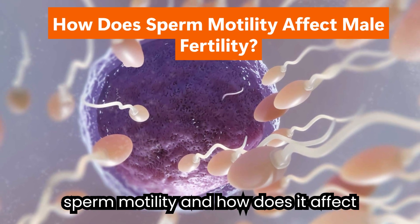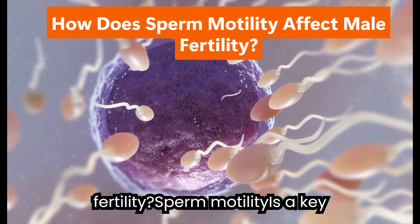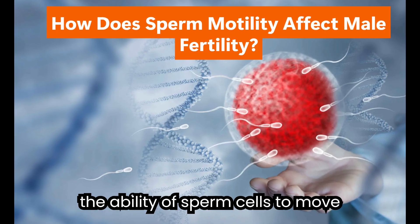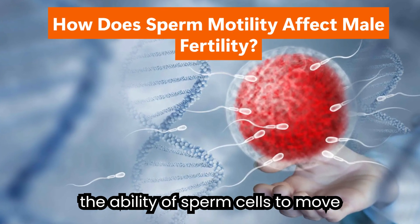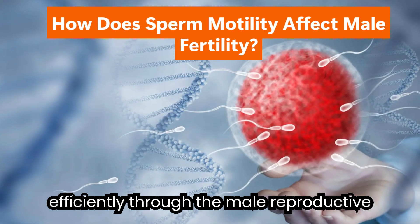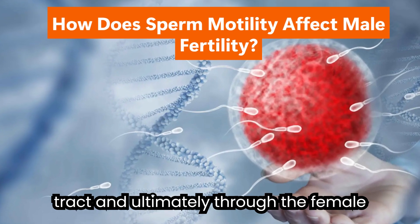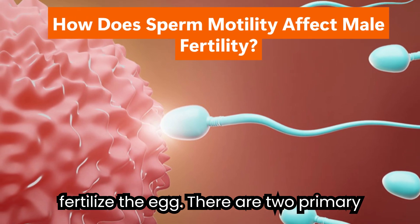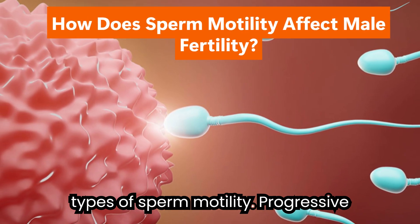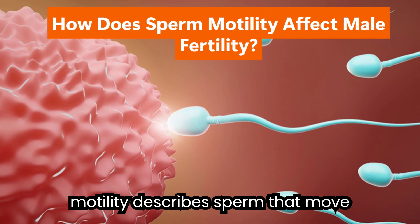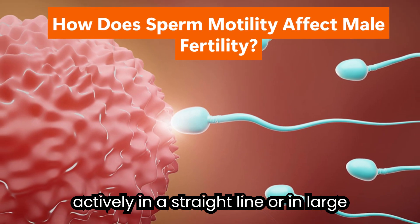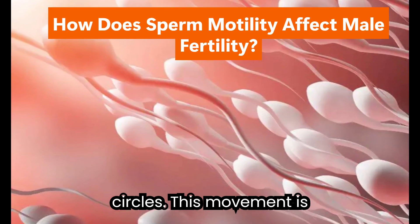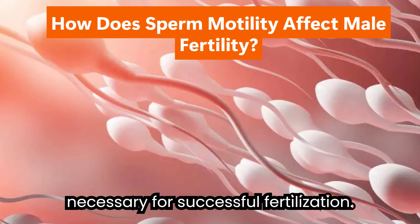What is sperm motility, and how does it affect fertility? Sperm motility is a key measure of male fertility. It refers to the ability of sperm cells to move efficiently through the male reproductive tract and ultimately through the female reproductive system to reach and fertilize the egg. There are two primary types. Progressive motility describes sperm that move actively in a straight line or in large circles — movement that is necessary for successful fertilization.